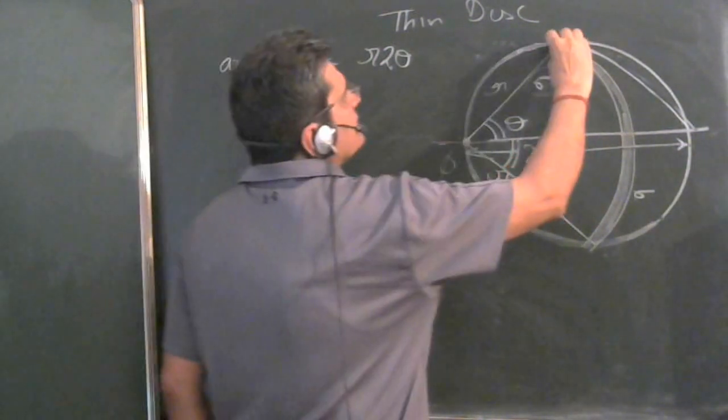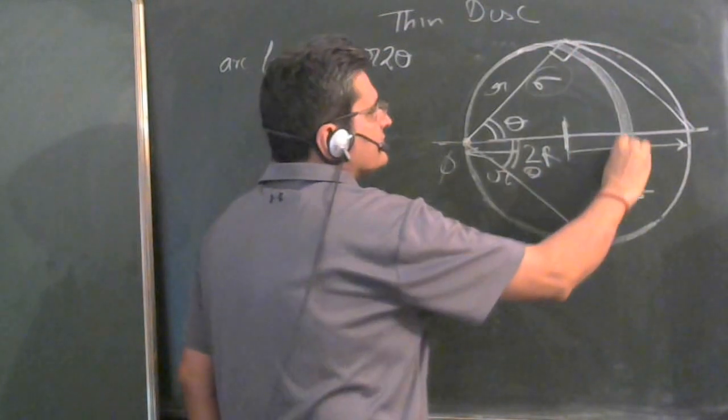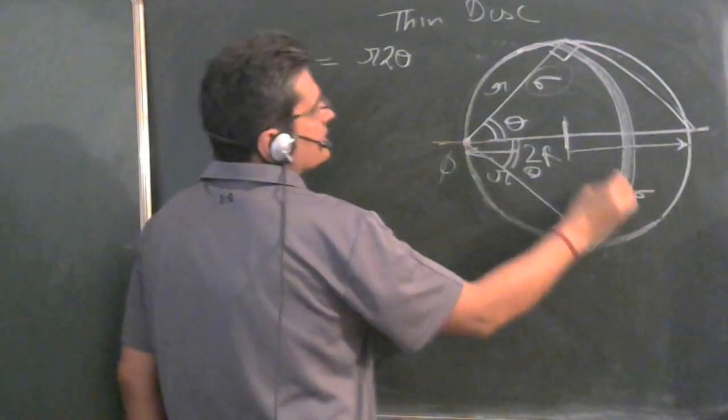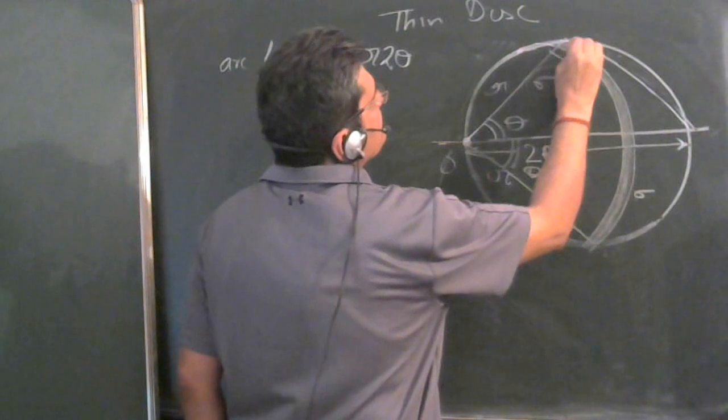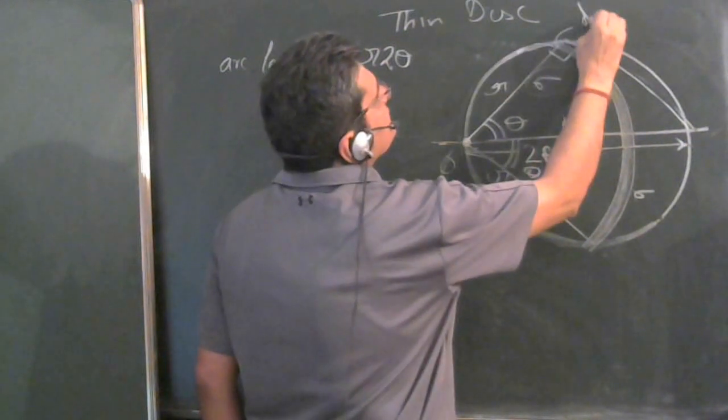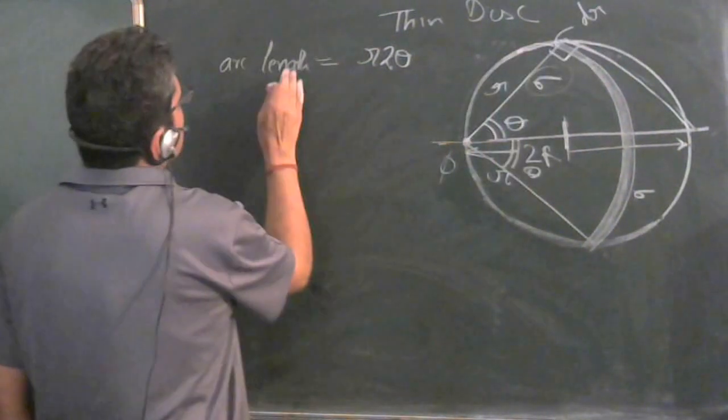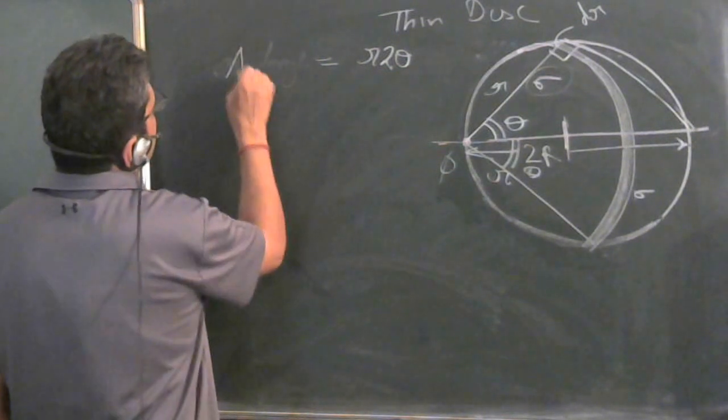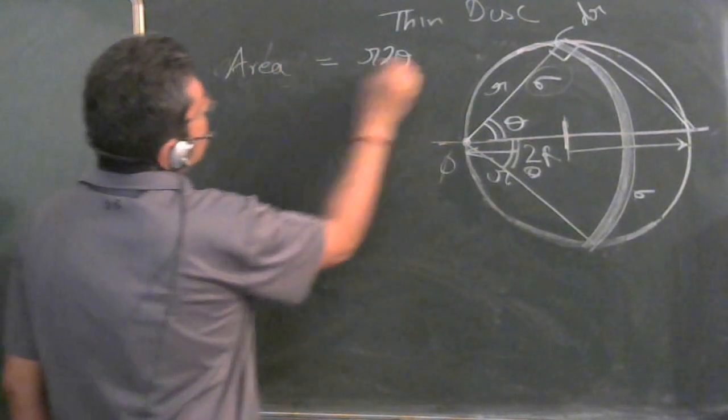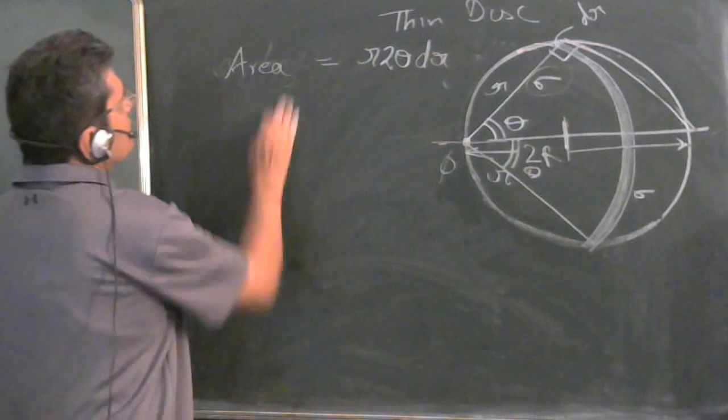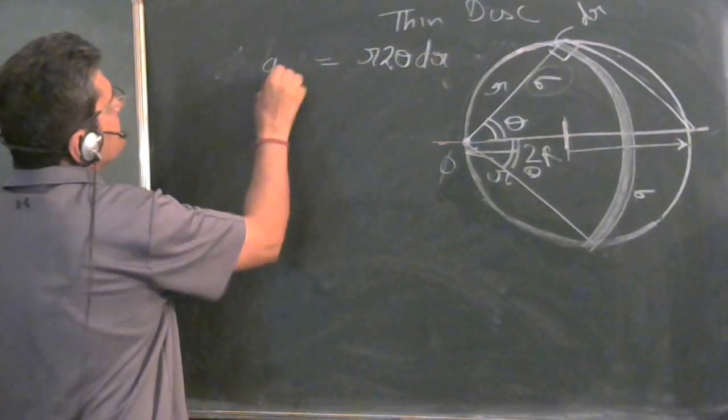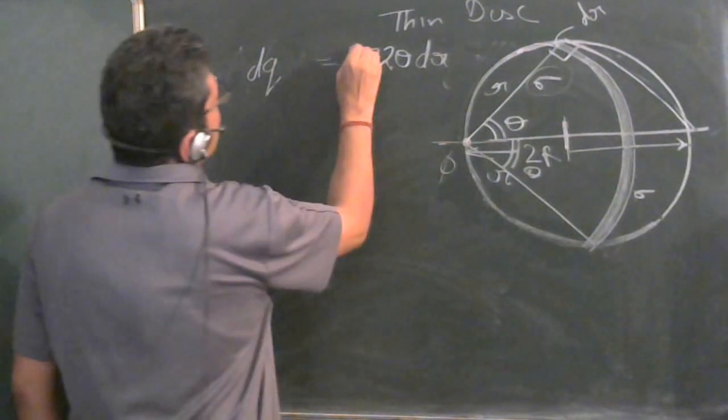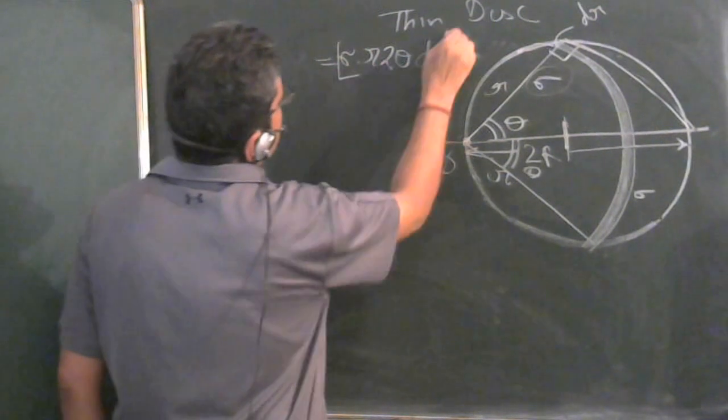What is the area of this strip? If we have taken this as R, in the same direction, take dr. So the area of this strip will be this times dr. What would be the charge on this strip? dq will be sigma times this.